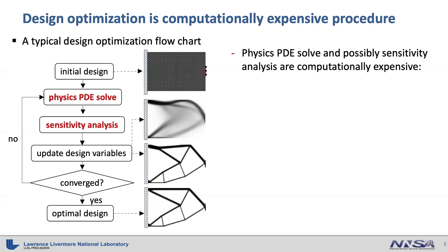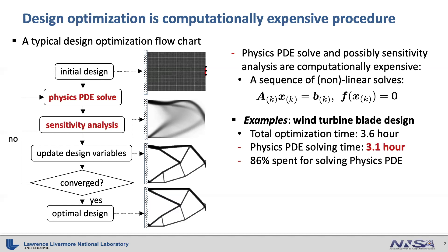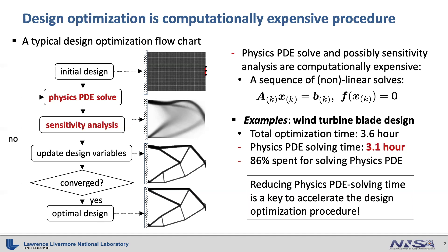Here the most expensive parts of the procedure are physics PDE solve and sensitivity analysis parts. Usually a sequence of large-scale linear or non-linear solves are involved. For example, in wind turbine blade design problem, the total optimization process takes 3.6 hours using 72 processors, within which the physics PDE solving part takes 3.1 hours, taking 86 percent of the whole optimization process. Therefore, accelerating the forward physical simulations is extremely important. We use reduced order models to achieve this goal.